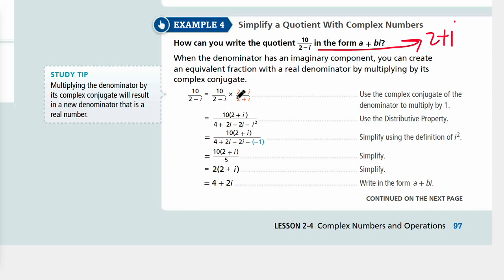10 times 2 plus 10 times i in the numerator. Then 2 times 2, plus 2 times i, minus i times 2, and negative i squared in the denominator. You simplify everything to get 4 plus 2i.